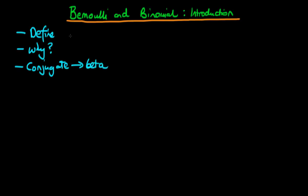So let's first start off by defining what is actually meant by a Bernoulli distribution. The typical example is flipping a coin — one side has heads and the other has tails. If the coin comes up heads, I'm going to define the value which our random variable takes on as equal to one. And if it comes up tails, we define the value of our random variable equal to zero.